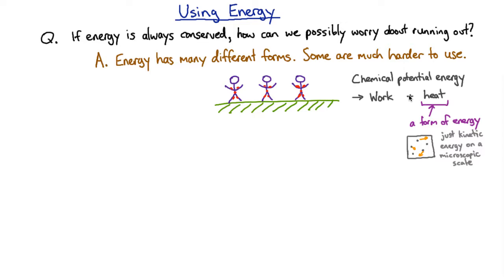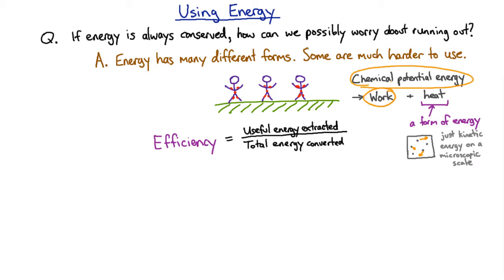There's this whole discipline in physics called thermodynamics where we talk about exactly what the limits are on trying to extract energy out of different sources of heat. When you talk about using energy, you're really talking about transforming energy from one form to another form—sometimes from one form to multiple other forms, of which you really only want one of them. That means we always have to worry about the efficiency of that process, which is just the fraction of energy that you extracted into the form you wanted divided by the total amount of energy that you used. In this case, it would be the work divided by the chemical potential energy that we used.